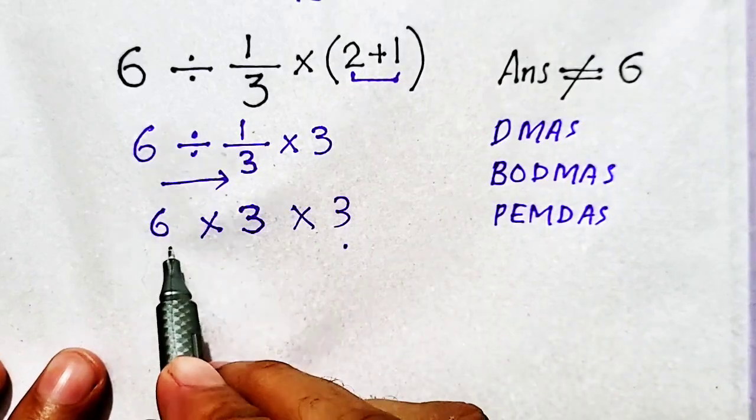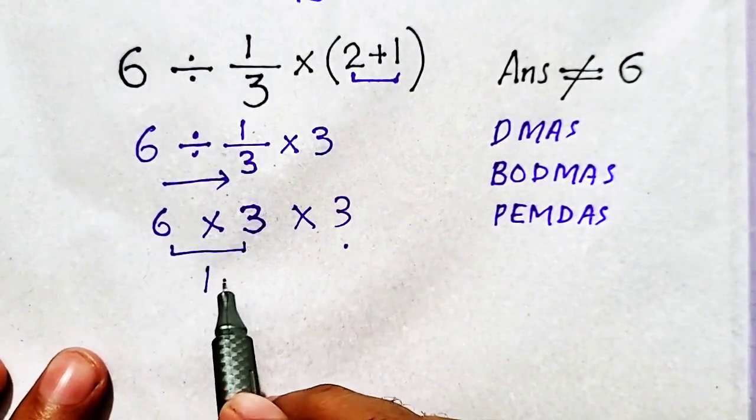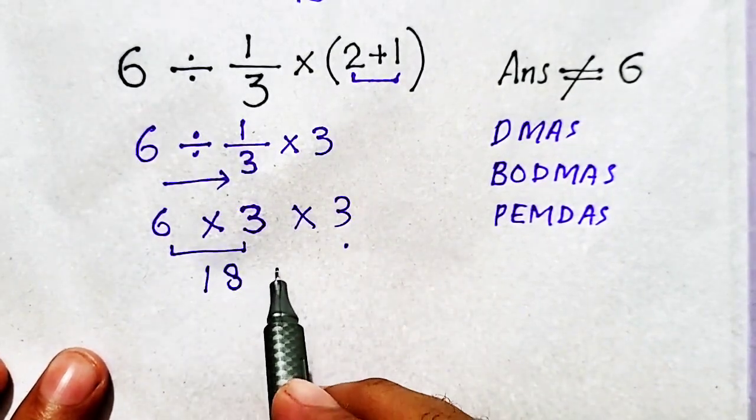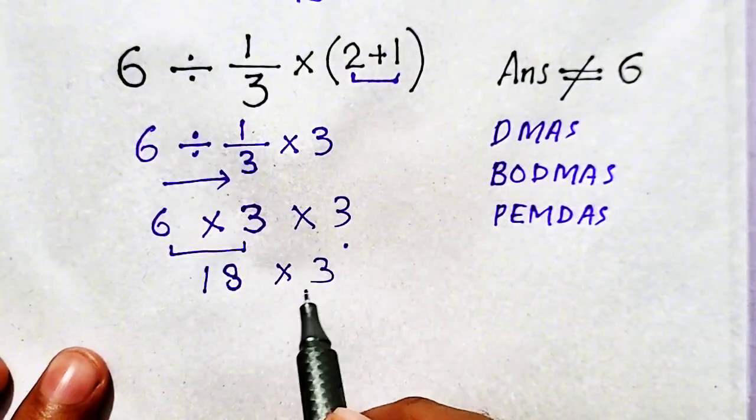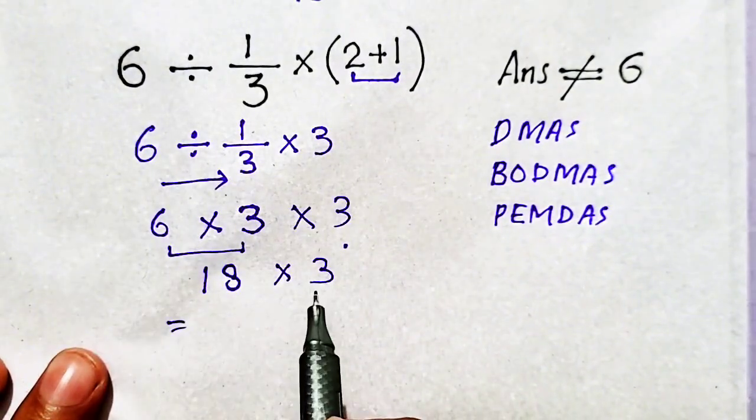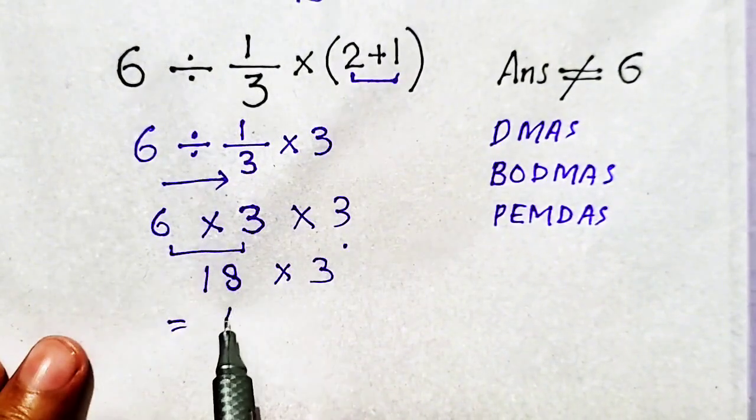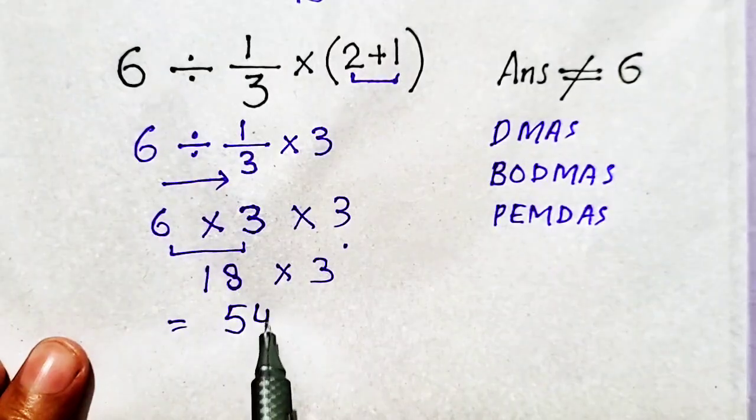Now, 6 times 3 will be equal to 18 times 3, so 18 times 3 will be equal to 54.